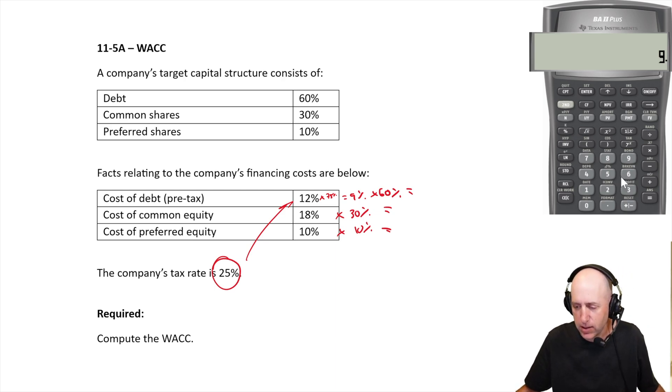9 times 60% - what is that? 5.4. I always mess it up as I'm putting it in the calculator. 18 times 30% - also 5.4, that's weird. I should change the numbers next time I revise this. 18 times 0.3, yeah also 5.4 in a strange coincidence. 10 times 10% - not 5.4, it's 1.